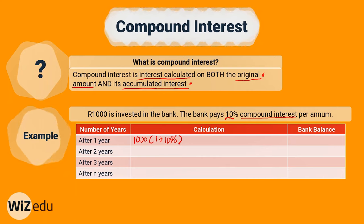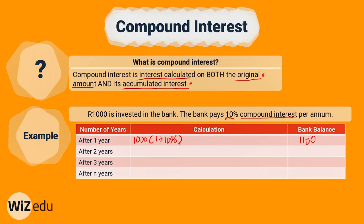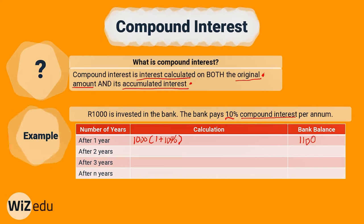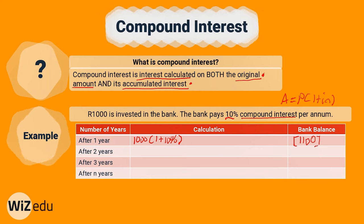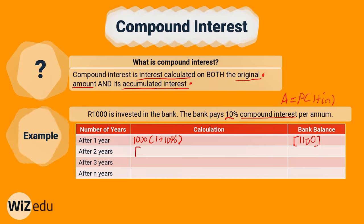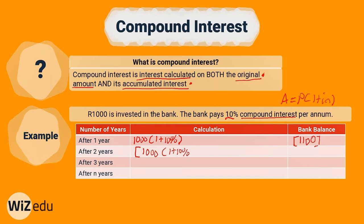After one year, we're going to have 1100 rand, which is the same as we had for simple interest. But now the difference arises in year two. We could use the same simple interest formula A equals P into one plus I times N, but just remember, we're going to be using the year-one balance as our present value for year two, because we're going to be calculating interest on interest.